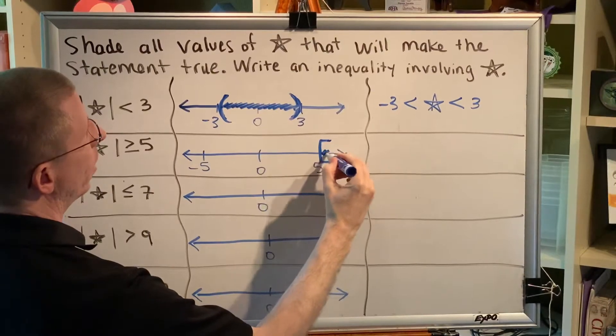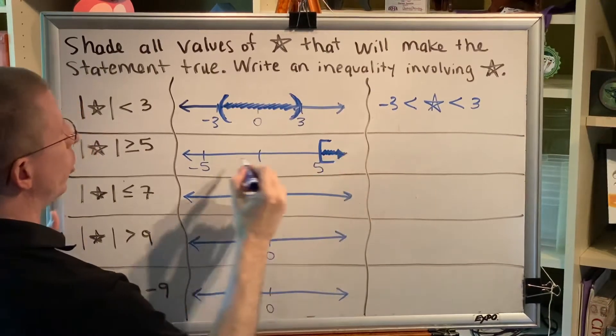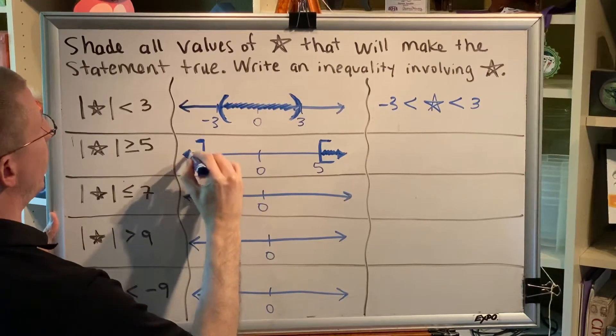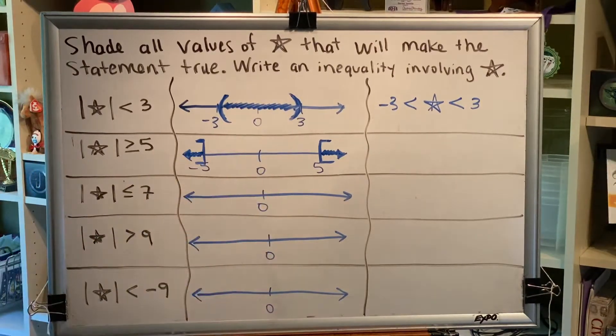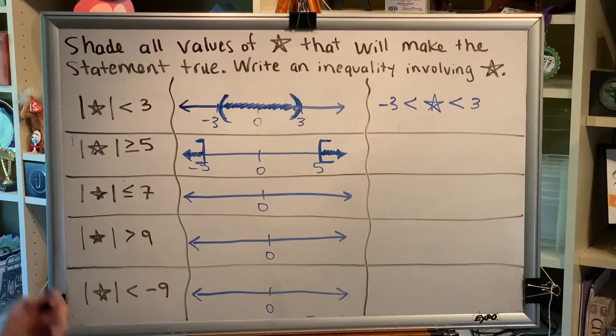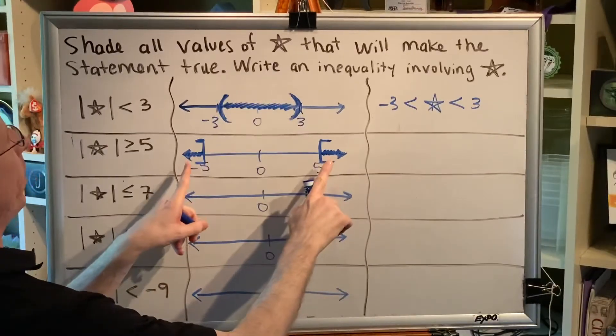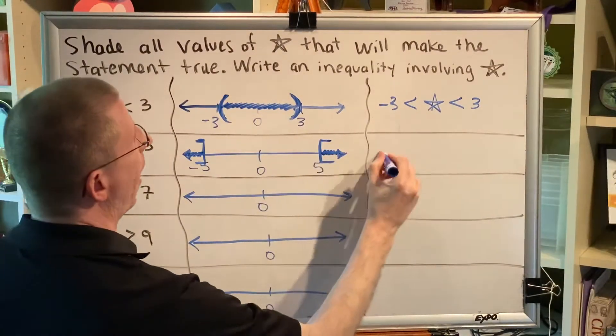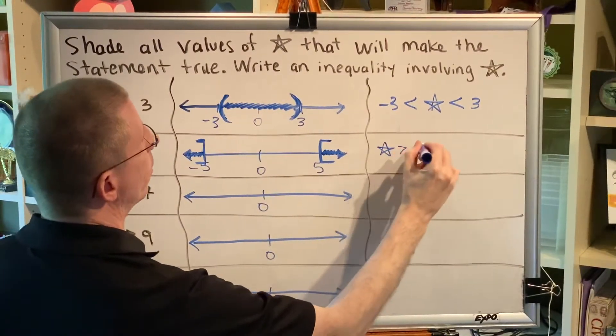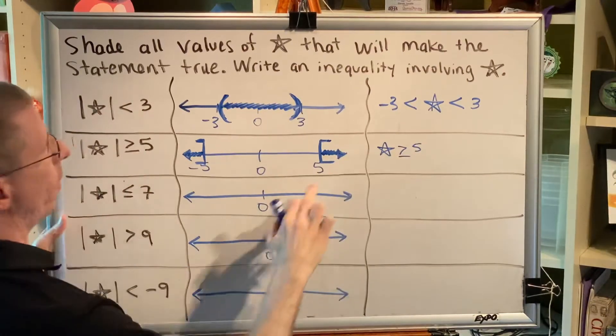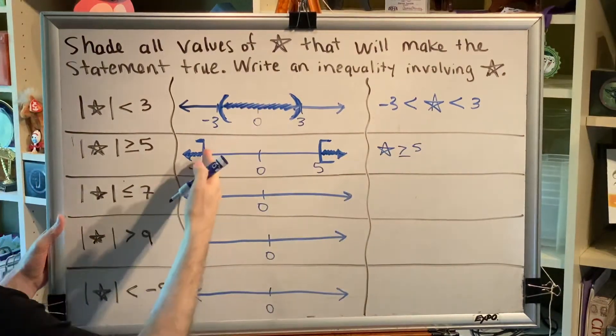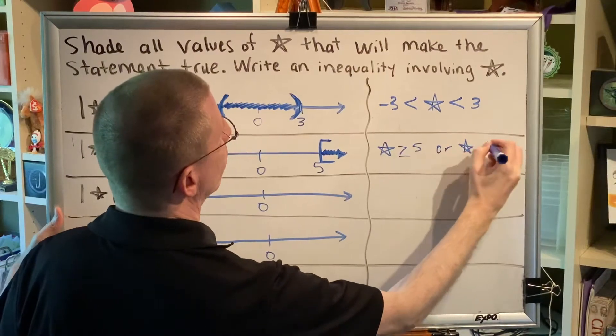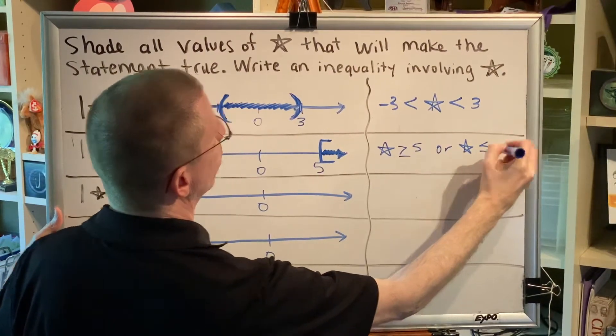You can be over here. You can be over here. But you can't get close to the celebrity because the celebrity is guarded. So that means there are two different places you can be. So there's going to be two inequalities. Right of 5, so star is greater than or equal to because of the bracket, or left of negative 5. So star is less than or equal to negative 5.